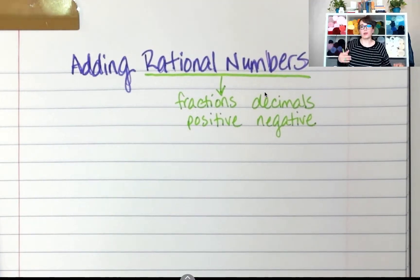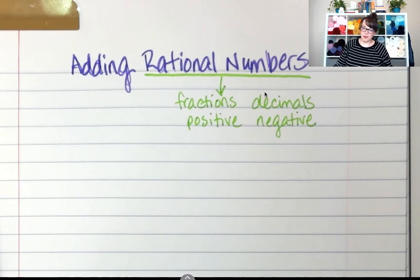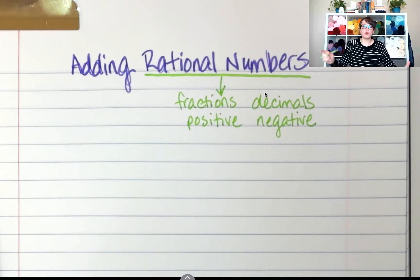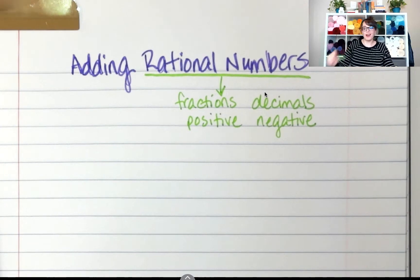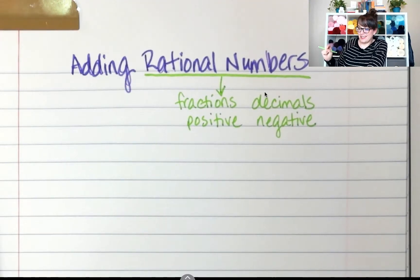So basically rational numbers are any number that you can really think of. 5 is a rational number. 1.2, that's a rational number. 7.234, that's rational. Negative 7.234, that's a rational number. If you can write the number down and say, boom, that's it. That's a rational number. We're going to learn how to add these today.